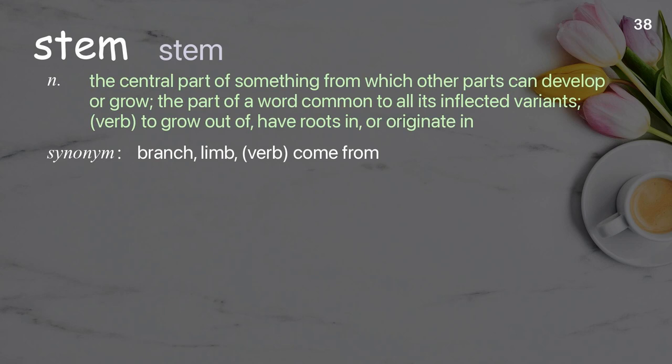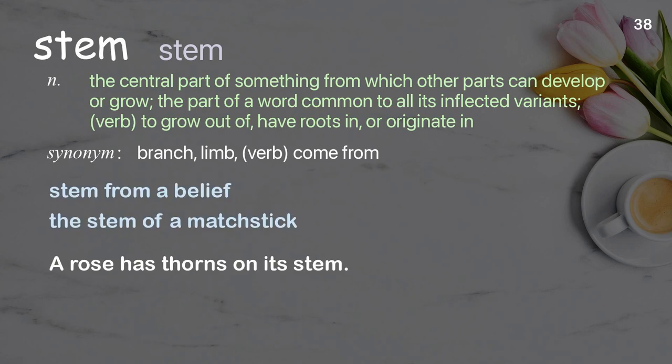Stem: the central part of something from which other parts can develop or grow; the part of a word common to all its inflected variants. Verb: to grow out of, have roots in, or originate in. Examples: stem from a belief, the stem of a matchstick. A rose has thorns on its stem.